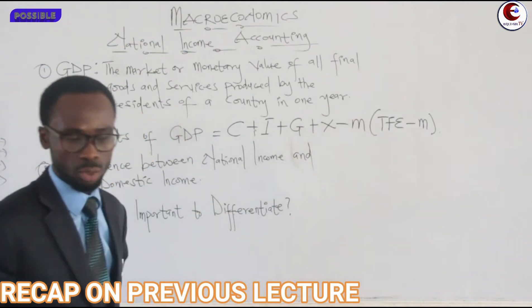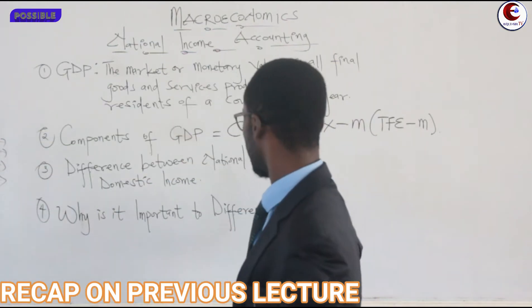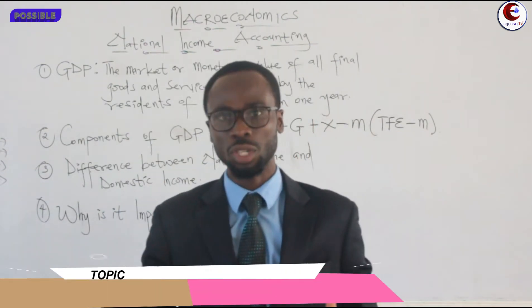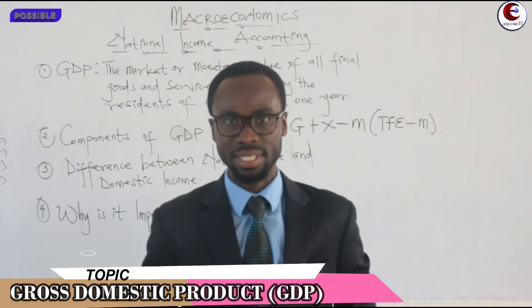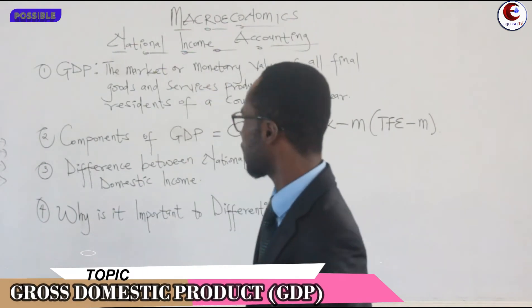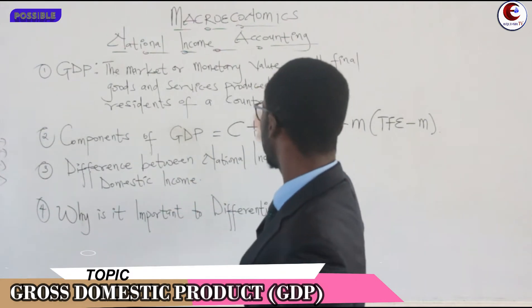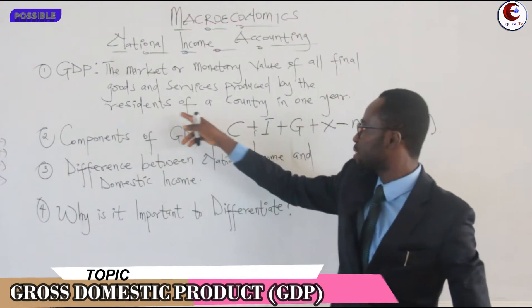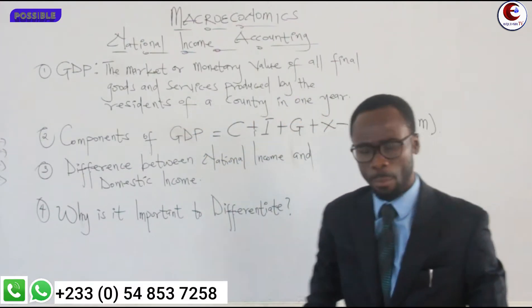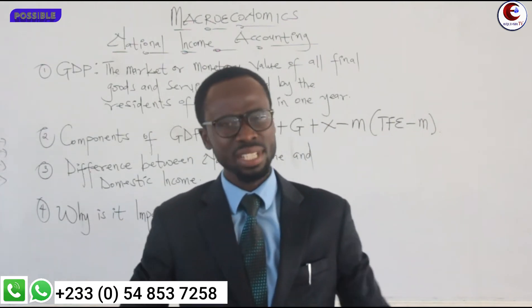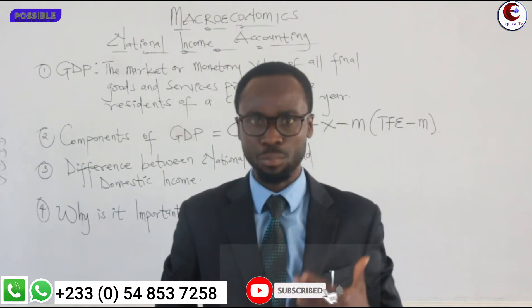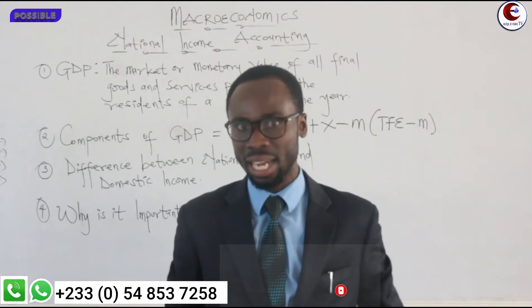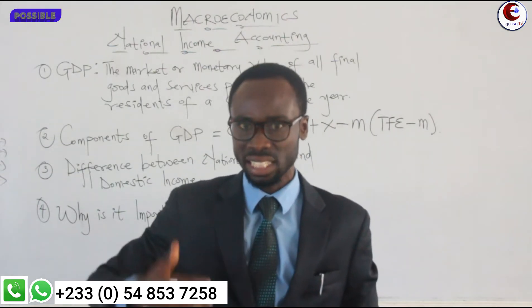That is where we ended in our last lecture. Today we are going to start with GDP — gross domestic product or gross domestic expenditure. When we talk about gross domestic expenditure, we are talking about the market or monetary value of all final goods and services produced by the residents of a country in one year. The market value refers to the prevailing price caused by the invisible hand of the market — demand and supply.